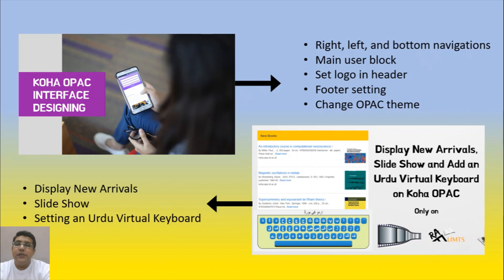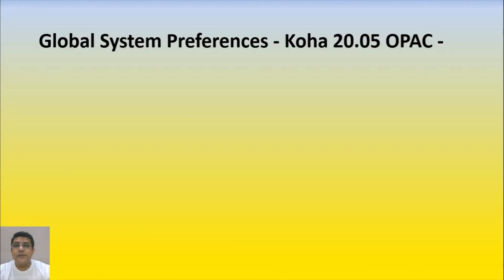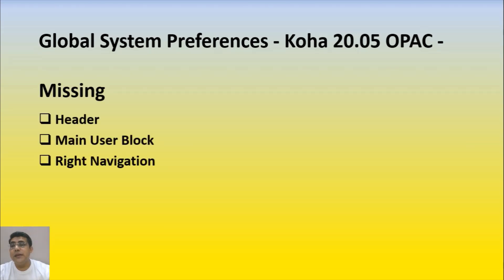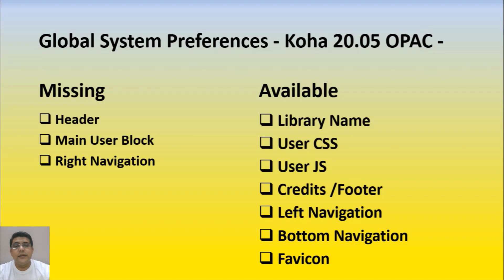So what is new in Koha 20.05 interface designing? In the global system preferences of Koha 20.05, there are a few important areas that are missing — for example, header, main user block, and right navigation. Right navigation was also not available in 19.11. The rest of the areas are available as before: library name, user CSS, user JS, our credits, our footer, left navigation, bottom navigation, and the favicon — they are all available.